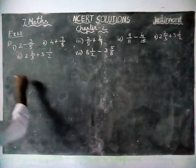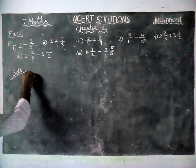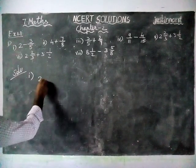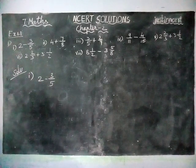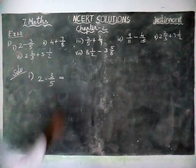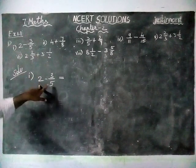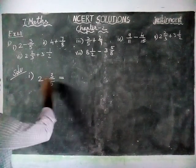The first question: 2 minus 3 by 5. 2 minus 3 by 5 is equal to... First we should convert this fraction into like fractions. So now we are going to multiply by 5 by 5.